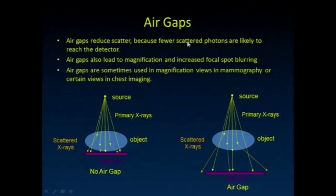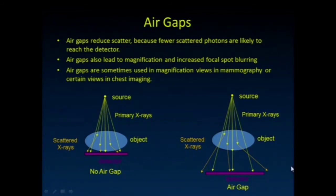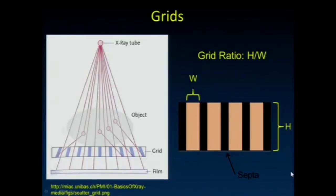Air gaps also reduce scatter. If you move the detector away from the object, you give room for some of these scatter events to escape and not strike the detector. So using an air gap can help. That's why we don't use grids in magnification mammography — because there's an air gap there that already helps keep our scatter down.